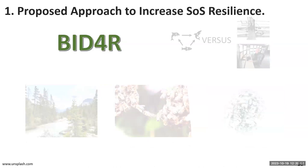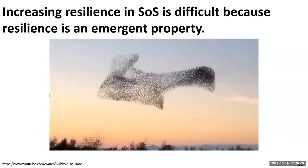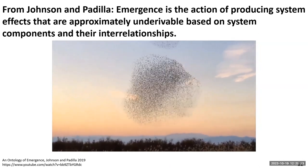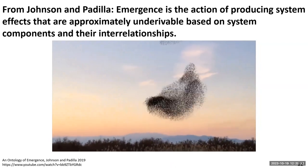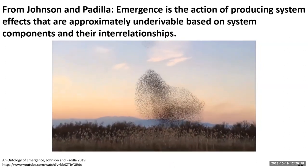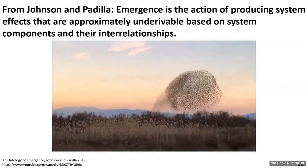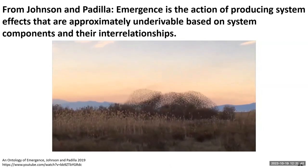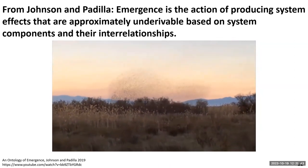Let's talk about why designing for resilience is still a problem in 2023. One key challenge is that resilience is an emergent property. Emergence is the act of producing system effects that are approximately underivable based on system components and their interrelationships. If we look at a flock of birds, we can understand the logic of each individual bird, but we won't understand the higher-level system patterns until we consider the system as a whole. That emergent property, in this case, is the spatial distribution.